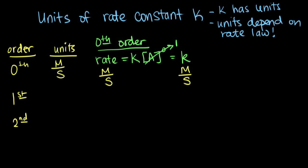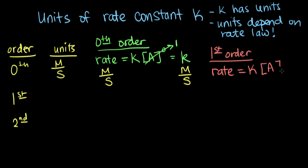We can use that same idea to figure out the units of k for first and second order reactions. For a first order reaction, the rate law is: rate equals k times the concentration of our reactant raised to the first power. The units of rate are molar per second, and the units of concentration are always molar. So k times molar equals molar per second — the molars cancel, and we're missing a 1/second term. That tells us the units of k are 1 over seconds.